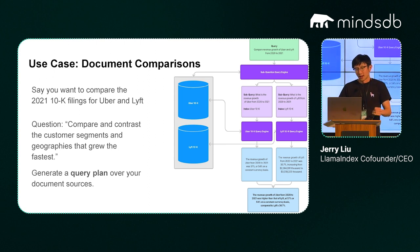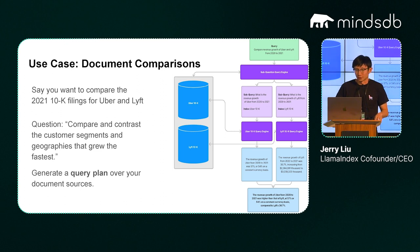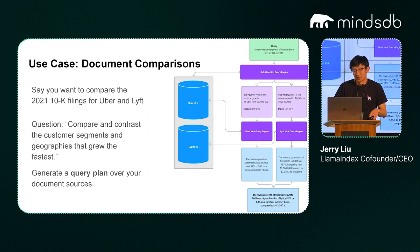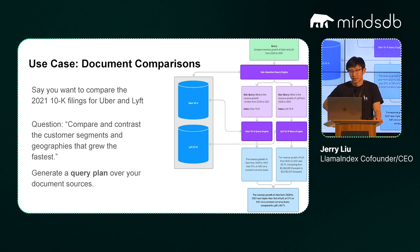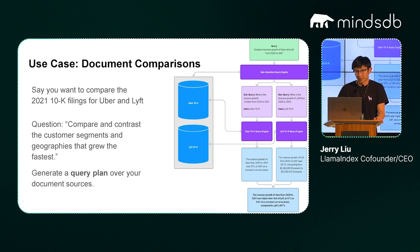Once you have these two sub-queries, you execute them against the relevant indexes that the language model thinks are relevant — just a standard top-K vector store retriever. You synthesize an answer for each: 'The revenue growth of Uber to 2021 was 57%, and the revenue growth of Lyft from 2020 to 2021 was 36.7%.' Finally, you combine everything in the final answer. This is a construct optimized for document comparisons — an in-between of something completely hard-coded versus an unconstrained agent-style interaction, still targeted toward document comparisons but relying on agent-like LLM behavior to break down the question.